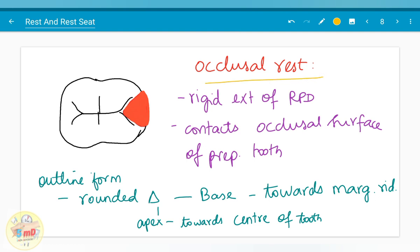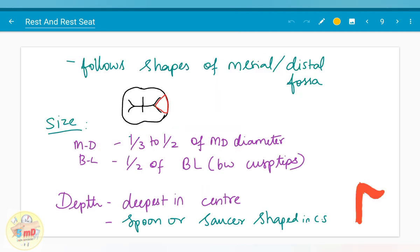As per definition, it is the rigid extension of RPD that contacts the occlusal surface of the prepared tooth. The outline form of the occlusal rest resembles a rounded triangle with a base towards the marginal ridge and the apex towards the center of the tooth. It follows the shapes of the mesial or distal fossa as you could see here.